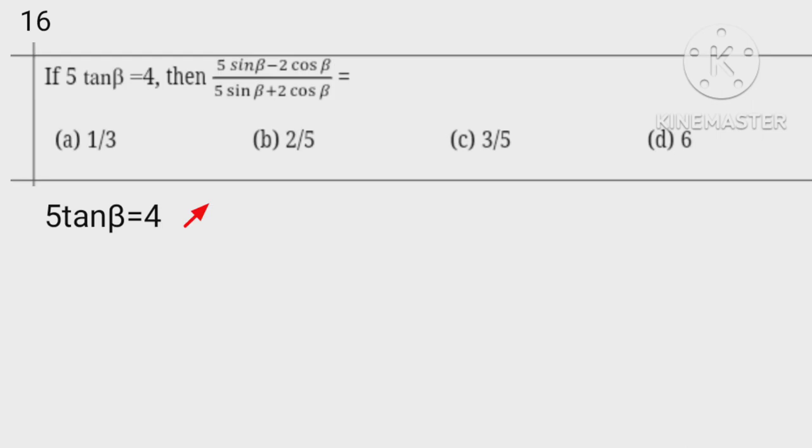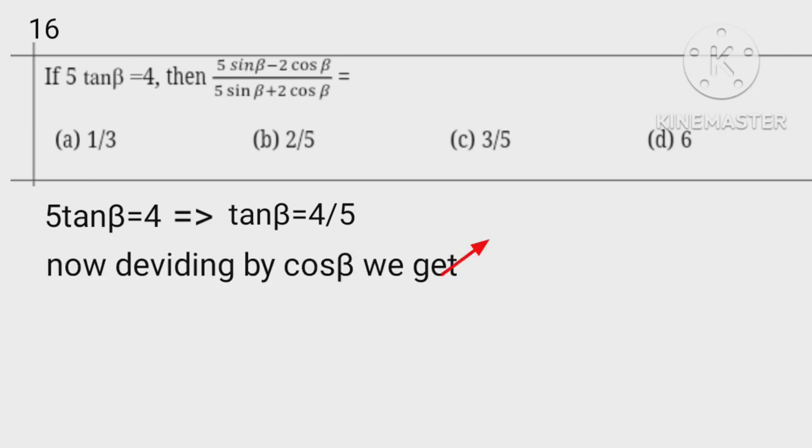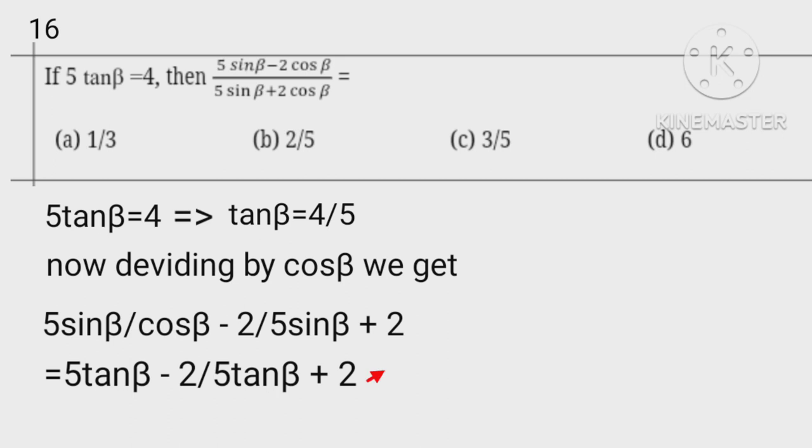5 tan beta equals 4 implies that tan beta equals 4 fifths. Dividing numerator and denominator by cos beta, we get 5 sin beta upon cos beta minus 2 upon 5 sin beta upon cos beta plus 2 equals 5 tan beta minus 2 upon 5 tan beta plus 2. Putting tan beta equals 4 fifths, we get the result as 1 upon 3.